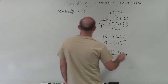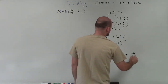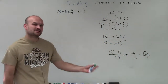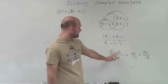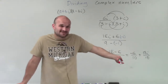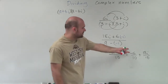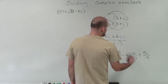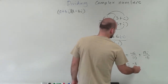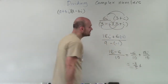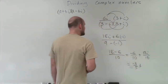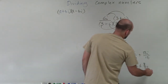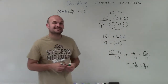Then I just rewrite this in a plus bi format. So that's negative 6 over 10 plus 18i over 10. Because you want to make sure you always write it in a plus bi format, so you take your denominator and divide it into both terms of your binomial. Now, in this case, we can actually simplify this. How can I simplify 6 and 10? Well, you can see they both share a 2. So if I divide out a 2, I'd be left with negative 3 fifths plus 9 fifths i. That is your simplified answer when dividing complex numbers.